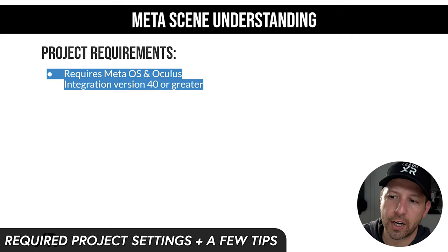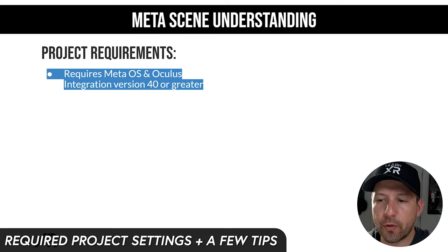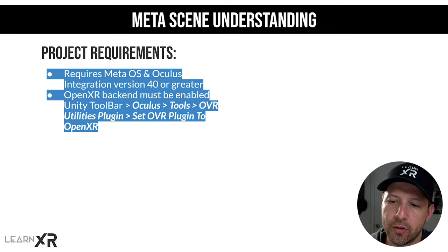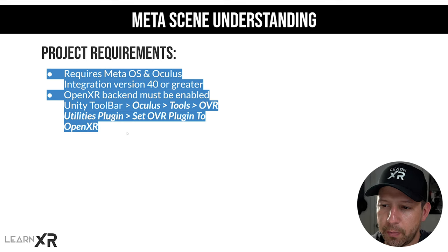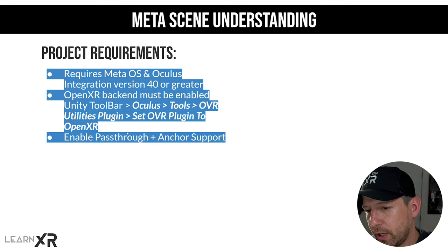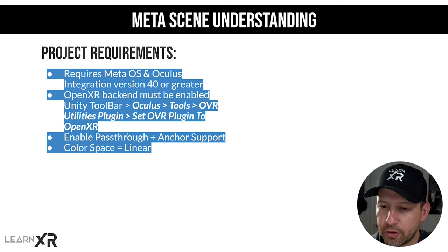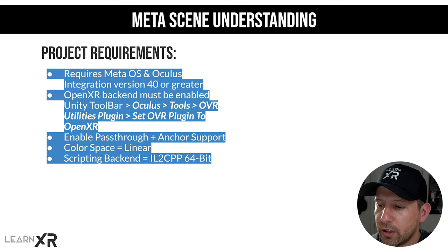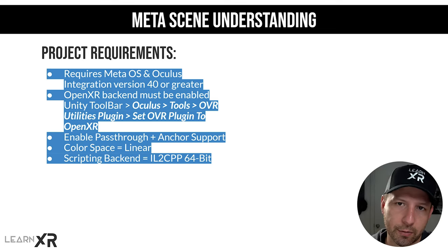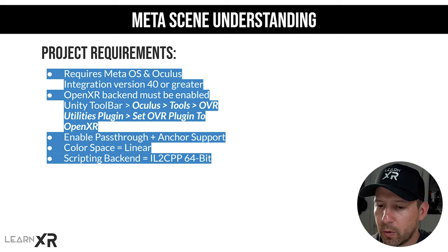Let's jump into the computer and start working on it. Meta OS and Oculus integration version 40 or greater are required. You also need to enable the OpenXR backend by going through Oculus Tools, OVR Utilities Plugin, and then set OVR Plugin to OpenXR. You also need to enable passthrough and anchor support. The color space is going to be linear, scripting backend is IL2CPP, and make sure that you have it set to 64-bit because that's what the Quest store will require.